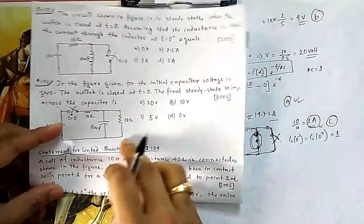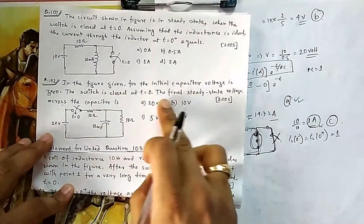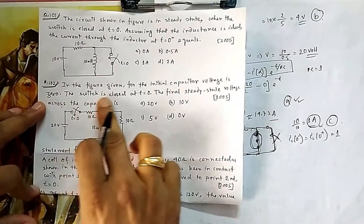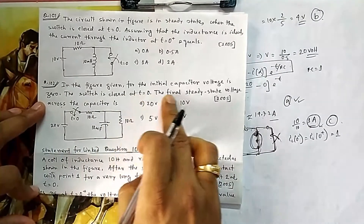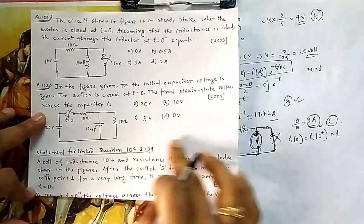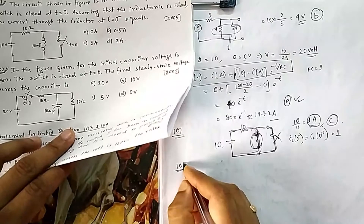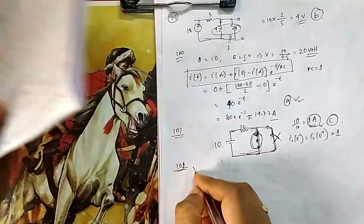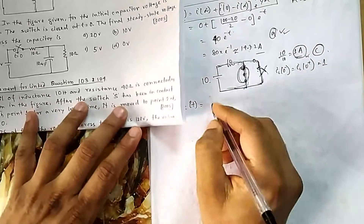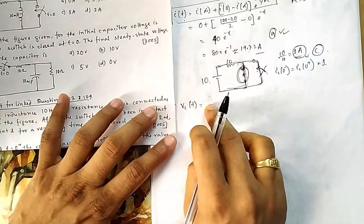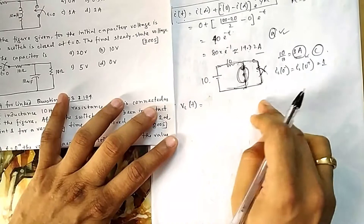For question 102, the initial capacitor voltage is 0 and the switch is closed at t equal to 0. We need to find the final steady-state voltage across the capacitor. We will use the standard formula: v_C(t) = V_final + (V_initial − V_final) × e^(−t/RC).